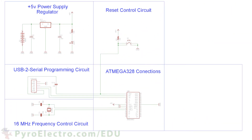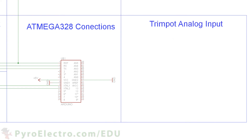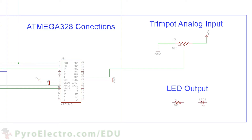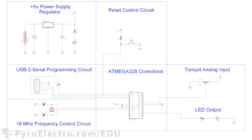Finally, we'll use a 10 kilo-ohm trim pot. The center output pin connects to the analog zero input, and the two outer pins connect to plus 5-volt power and to ground. The LED output connects digital pin 11 to a 100-ohm resistor, which connects to a red LED and then to ground. Our circuit is complete. The trim pot will give us a way to vary voltage input to the analog zero pin, and the LED will allow us to correlate output to that analog input.